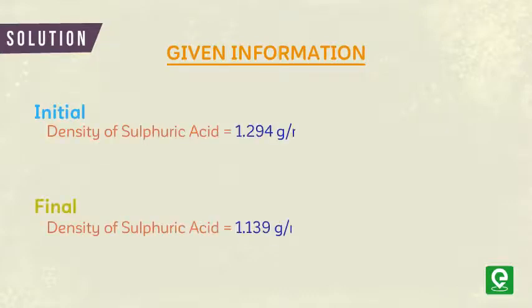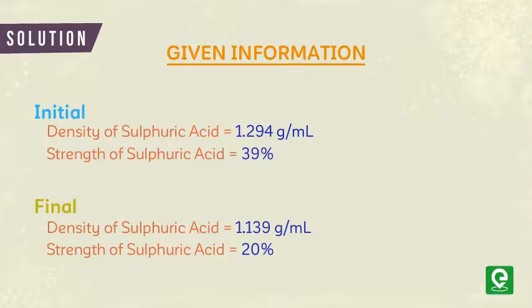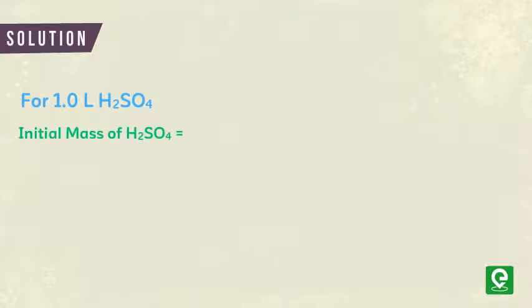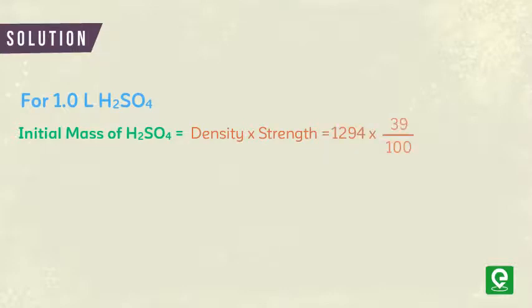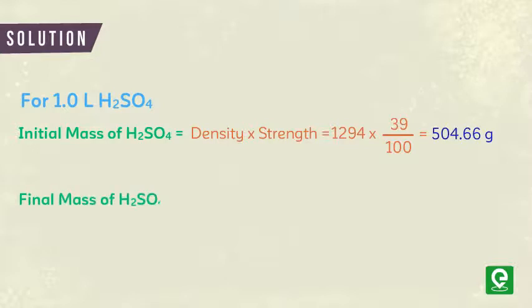Solution: We are given the initial and final density and strength of sulfuric acid. For 1.0 liter of H₂SO₄, the initial mass of H₂SO₄ = density × strength = 1294 × 39/100 = 504.66 grams.